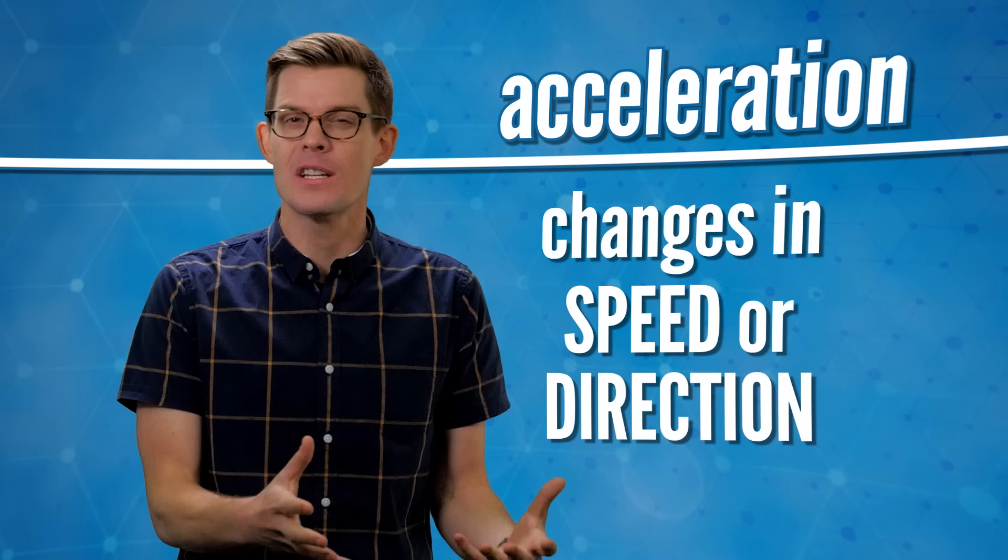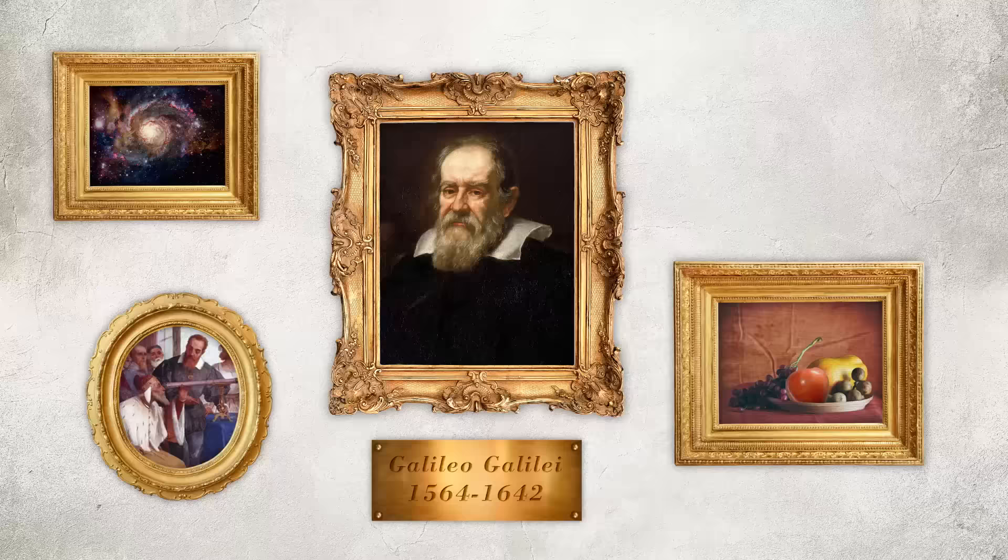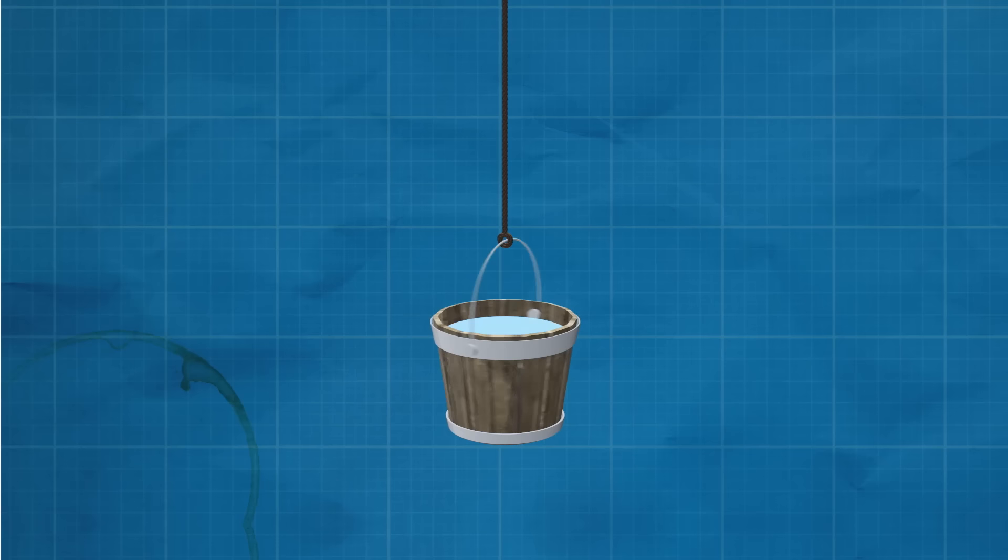But accelerated motion is different. Changes in speed or direction—daily experience tells us these seem to have value even without other objects as reference points. Isaac Newton illustrated this with a thought experiment. You have a bucket of water at the end of a rope. As you twist the rope, the bucket starts to spin. Eventually the water is pushed against the sides.